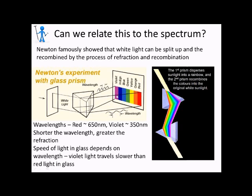This is how Newton saw the huge spectrum of colours within white light and also devised that violet light at this end of the spectrum travels slower than red light at this end of the spectrum when travelling in glass.